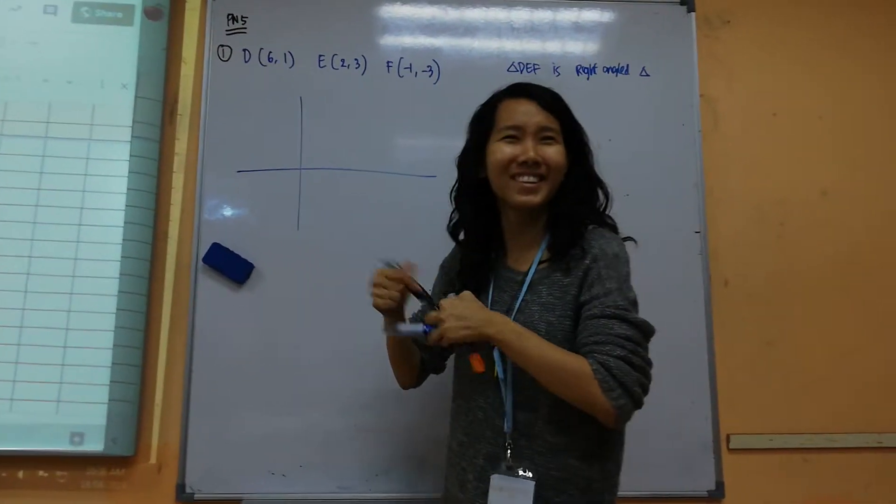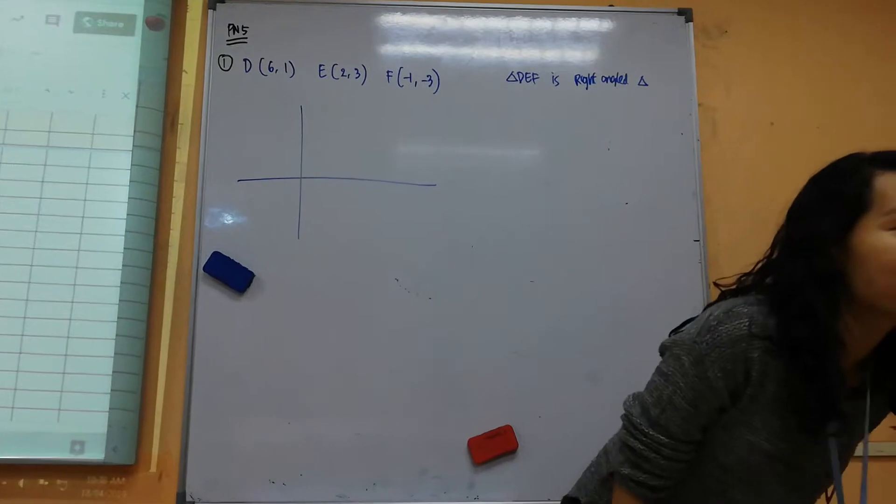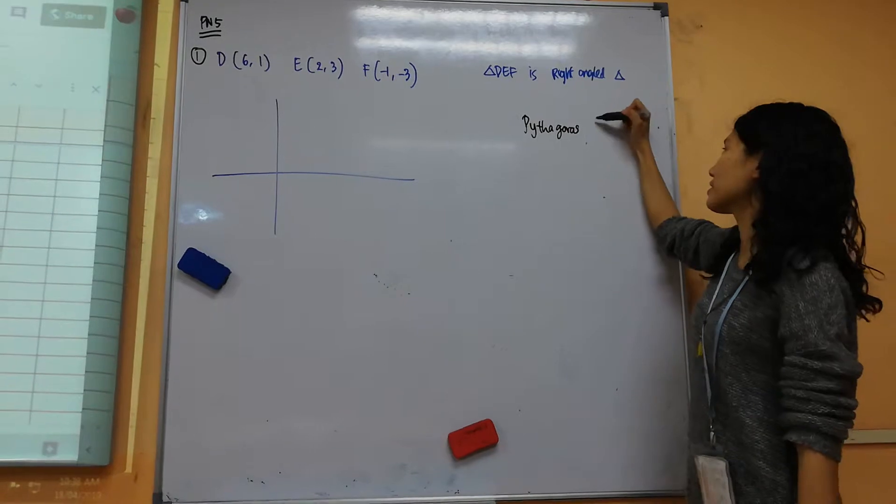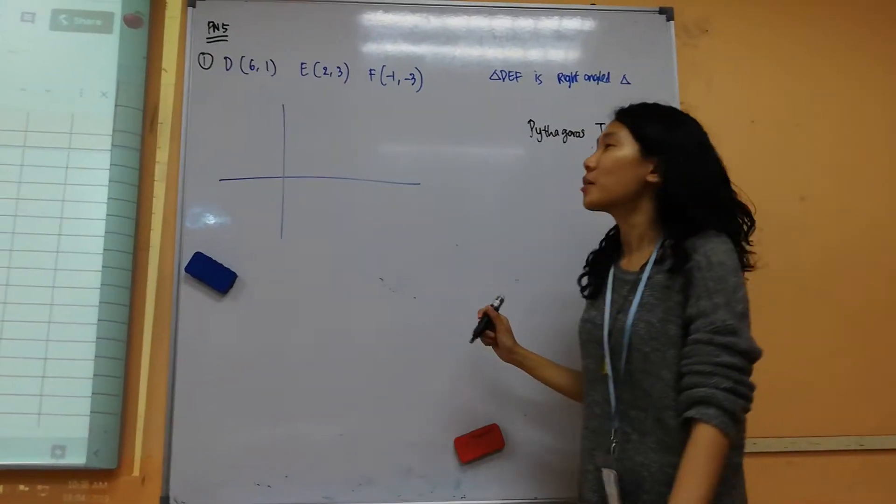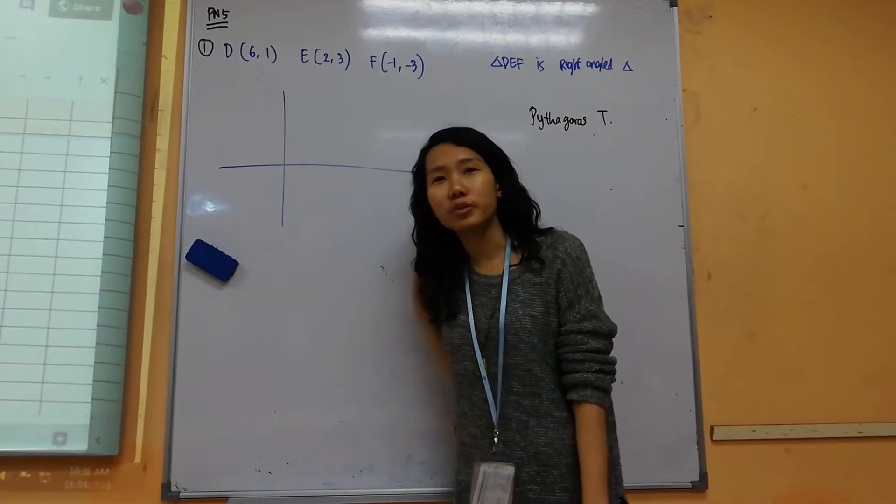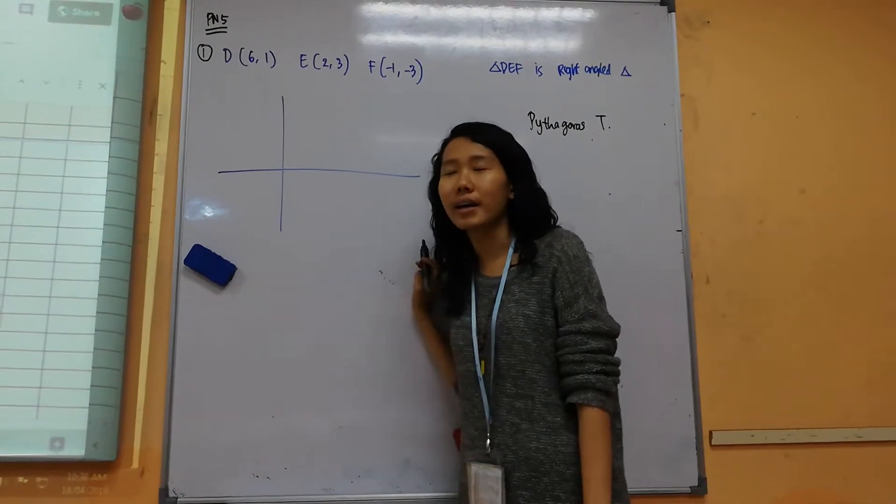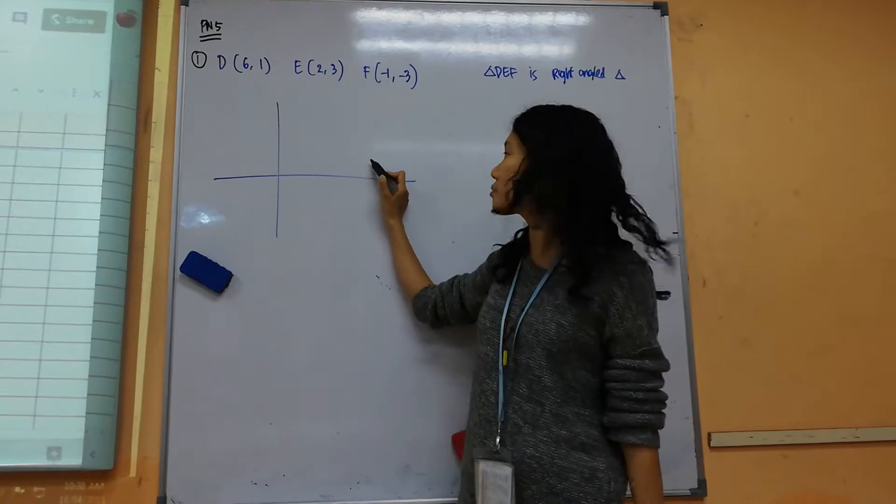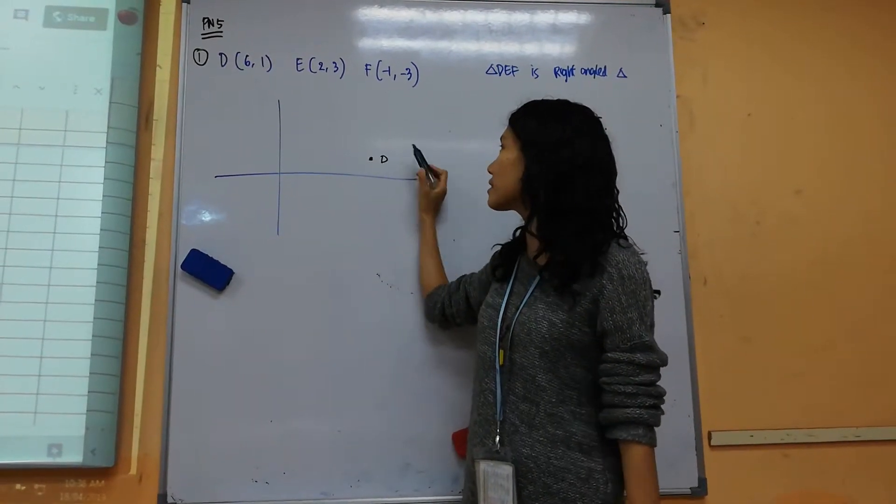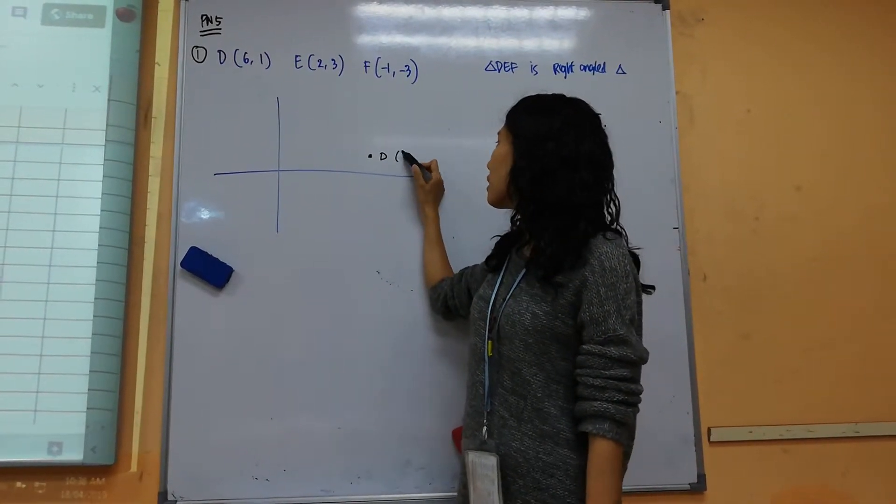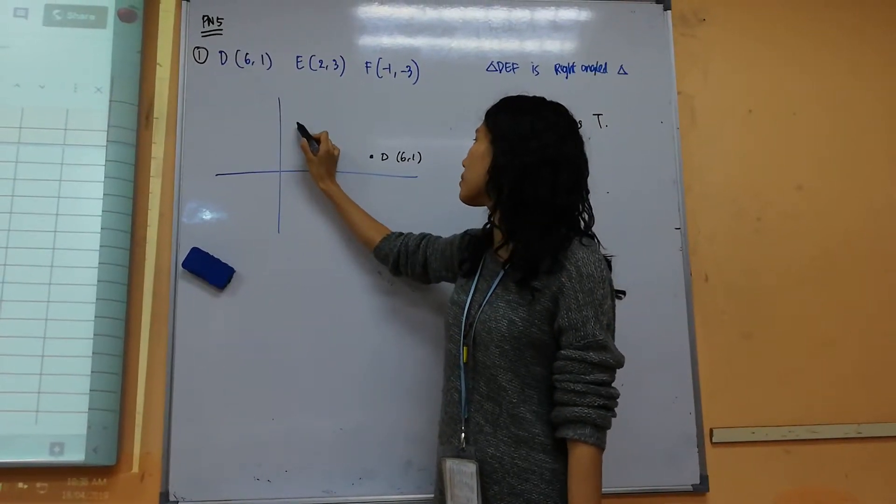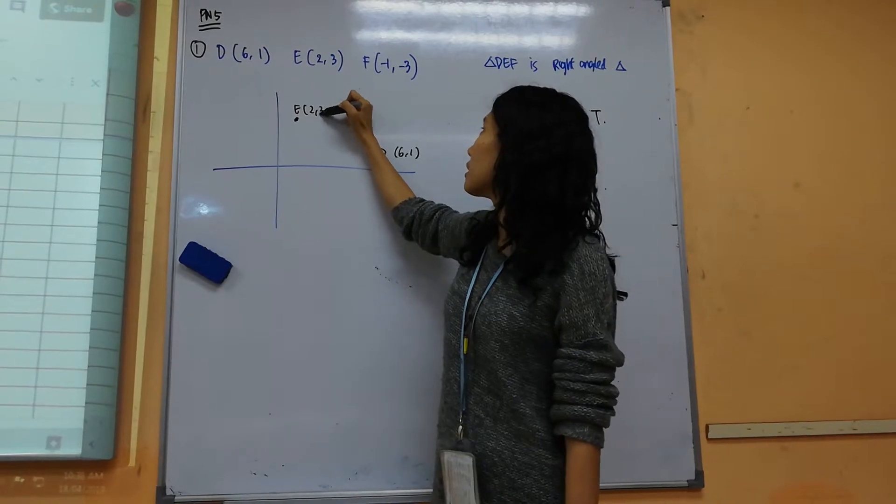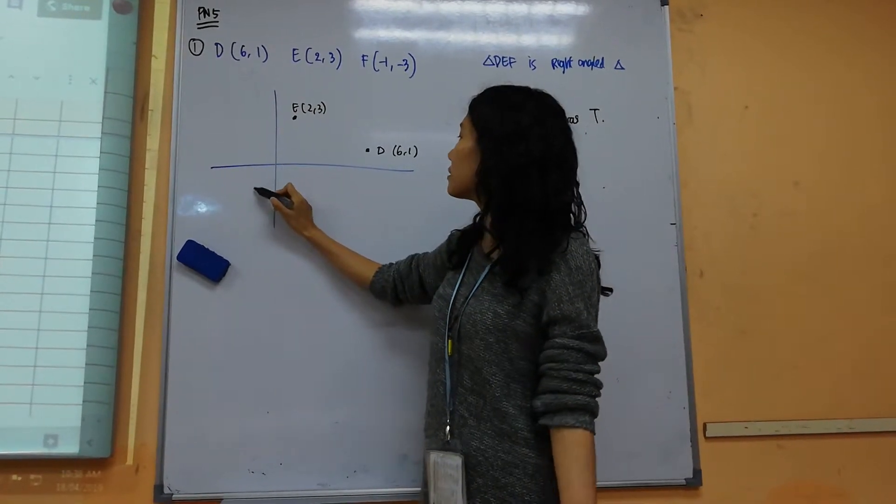What about this one? So for every coordinate geometry if you think it's hard to visualize, please sketch it. So (6,1) you just need to estimate, 6-1 maybe around here. Jeffrey listen first, later you continue at home. And then E is (2,3) maybe somewhere around here. F is maybe here. You see I just estimate.